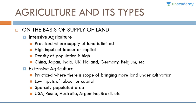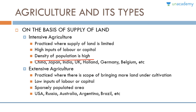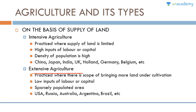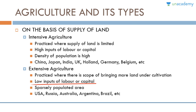On the basis of supply of land, agriculture may be divided into two kinds: intensive agriculture and extensive agriculture. Intensive agriculture is practiced where land supply is limited with high inputs of labor and capital, in areas with very high population density — practiced in Japan, China, India, United Kingdom, Holland, Germany, and Belgium. Extensive agriculture is practiced where there is scope to bring more land under cultivation, requiring low inputs of labor or capital in sparsely populated areas — practiced in the United States, Russia, Australia, Argentina, and Brazil.